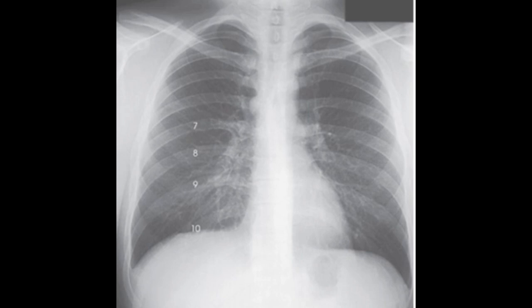Finally, instruct the patient to take a deep breath, exhale, take in another deep breath, and hold it. These breathing instructions help achieve greater aeration of the lungs with less effort. Adequate aeration of the lungs is evidenced by 10 posterior ribs seen above the diaphragm.